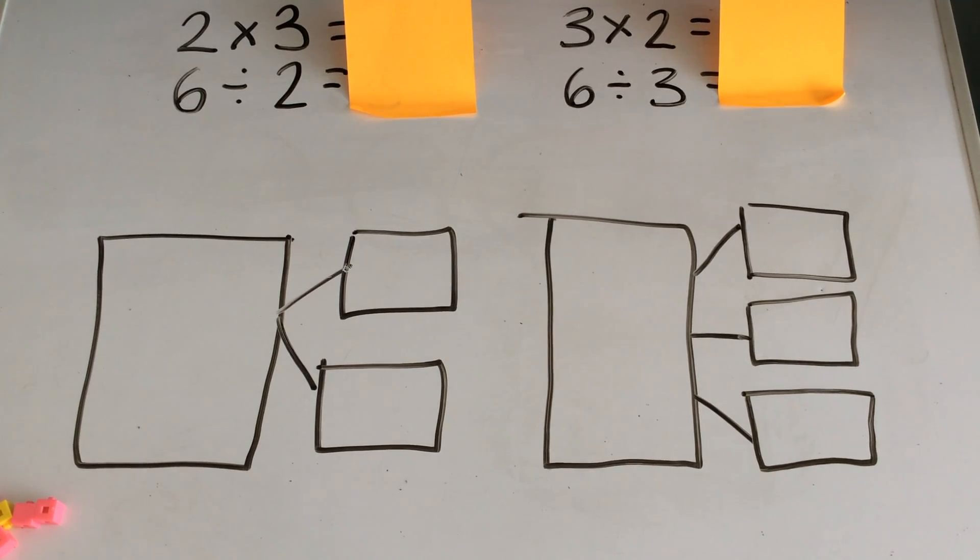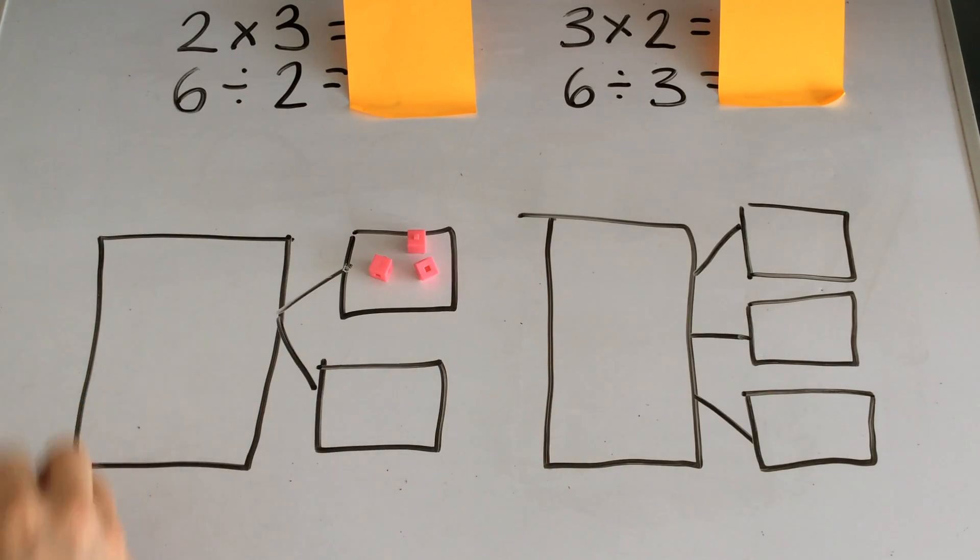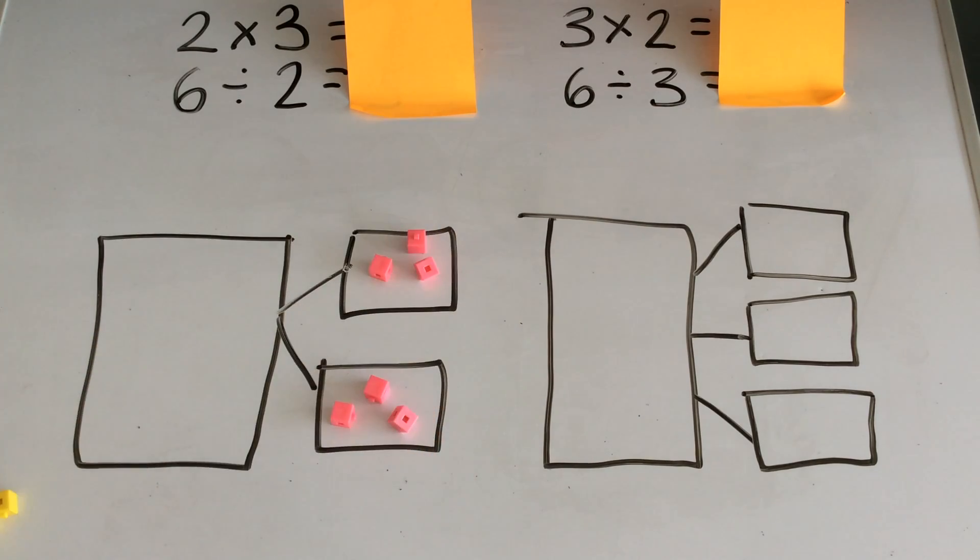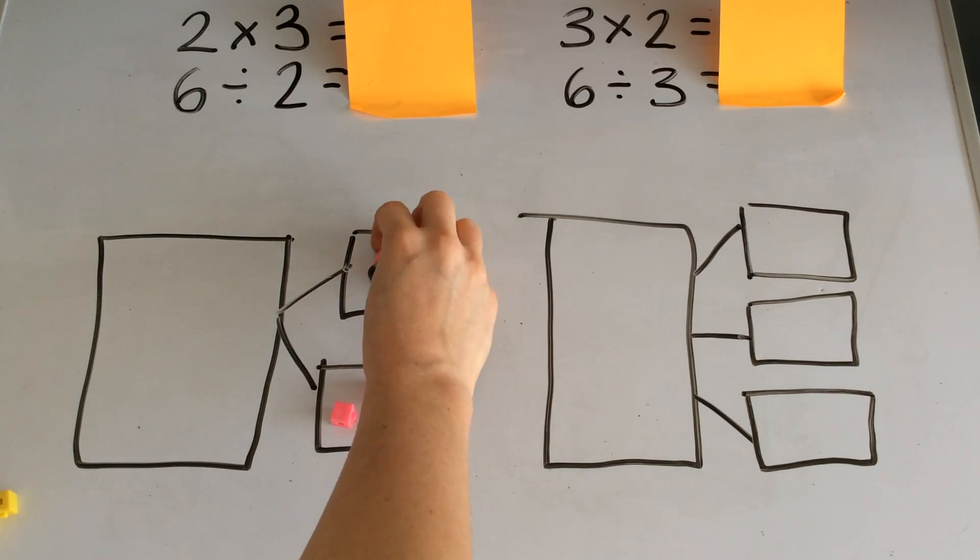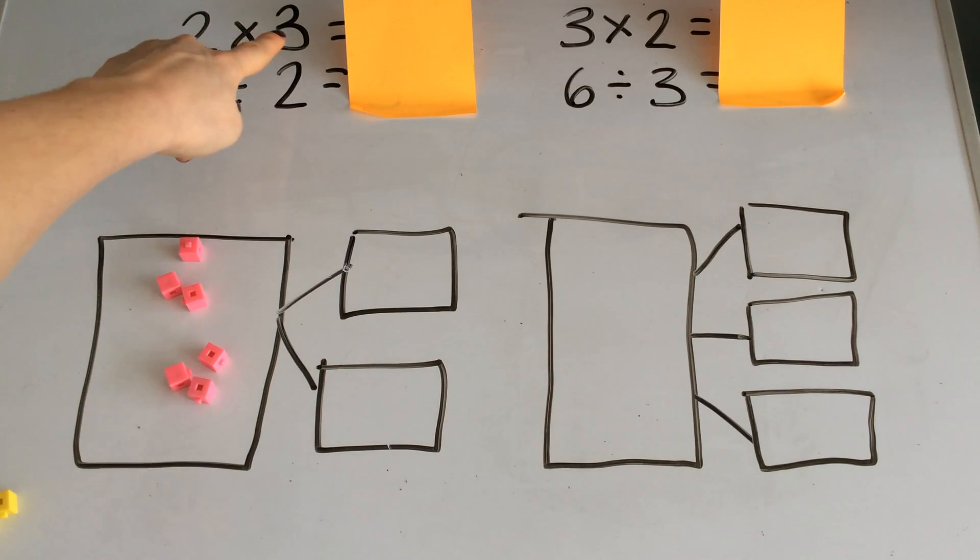I want to find the answer to 2 multiplied by 3. I'm going to have 3 cubes and I'm going to multiply them by 2. So I put 3 cubes in 2 different groups. So I have 3 and 3 which makes 6. So 2 multiplied by 3 is equal to 6.